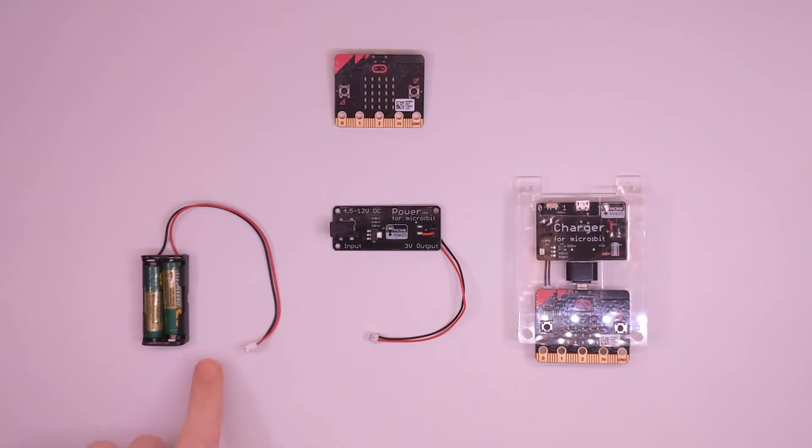You can see that on the left here I have the standard battery pack that comes with the micro:bit - two triple A batteries. It's fine, it does the job for a little while, but if you want something a little bit more permanent or long term, then you've got these two options. You can see that the first one, the Power for micro:bit, is powered by a barrel jack adapter so you can plug that in permanently, whereas the Charger for micro:bit is powered by a lipo battery. We're going to look at both of these tools today and see which would suit which type of project.